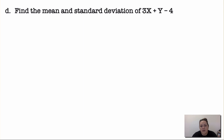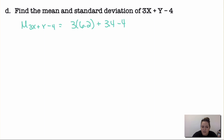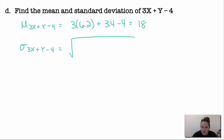For 3x plus y minus 4: the mean is 3 times 6.2 plus 3.4 minus 4, which gives 18. For the standard deviation, multiply the x standard deviation by 3, square that, add the y standard deviation squared, then take the square root: √((3×3.1)² + 1.4²), giving approximately 9.405. The constant subtracted (−4) does not affect the standard deviation.